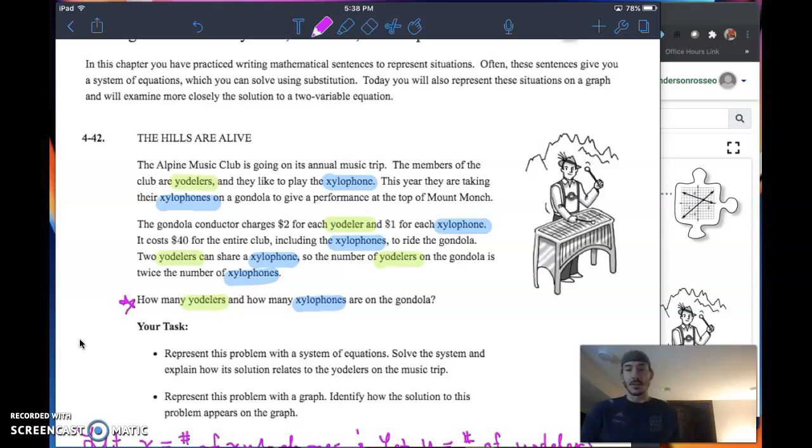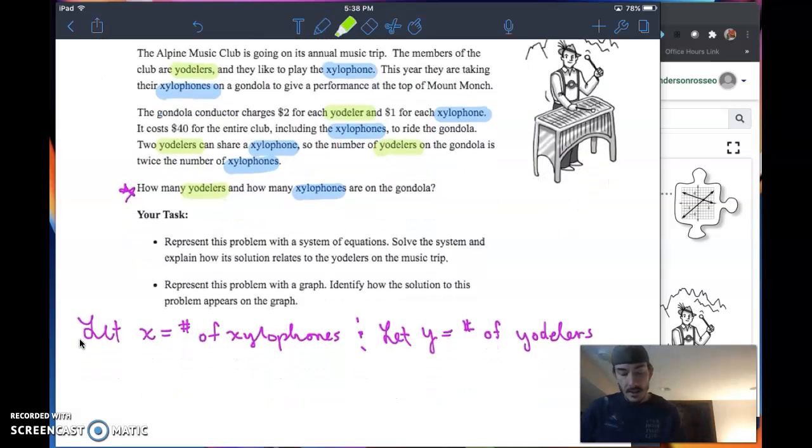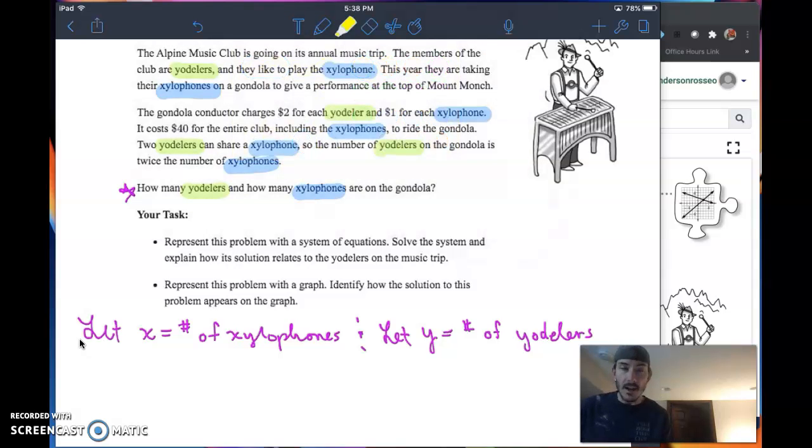I already pre-highlighted some things to give you an idea of what our let statements are going to look like. I'm going to let x, for what I hope is an obvious reason, be the number of xylophones and let y be the number of yodelers. Now I'm going to take the important information and use that piecewise in order to help me write these equations that we're going to need to solve.